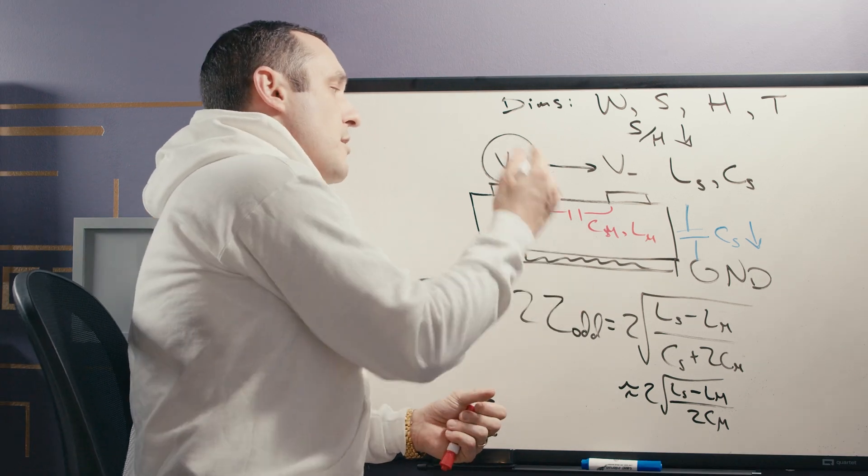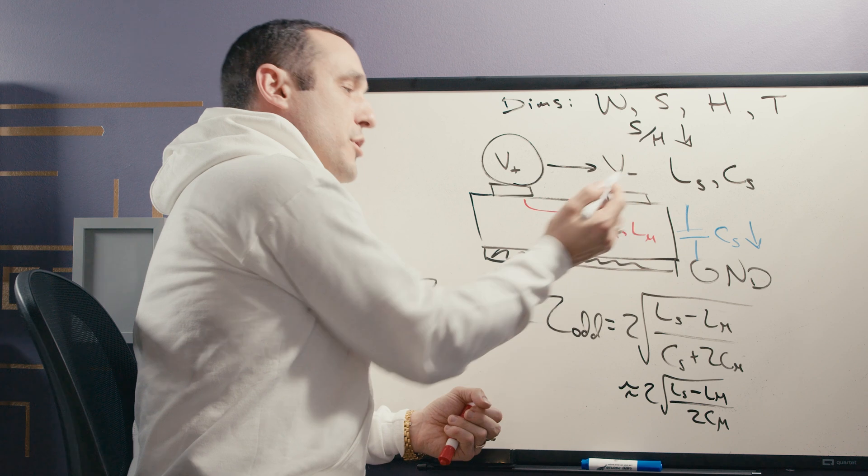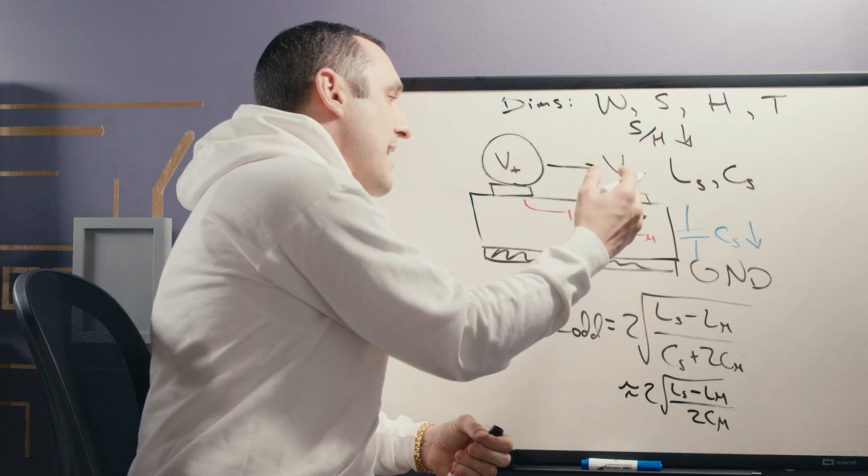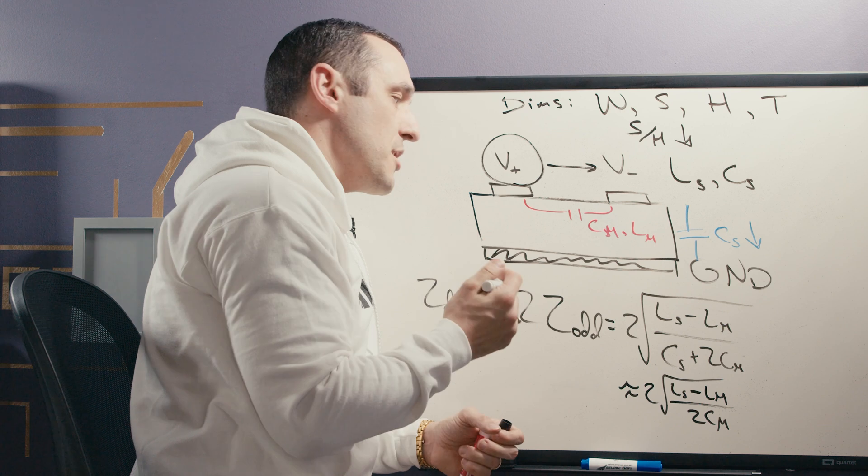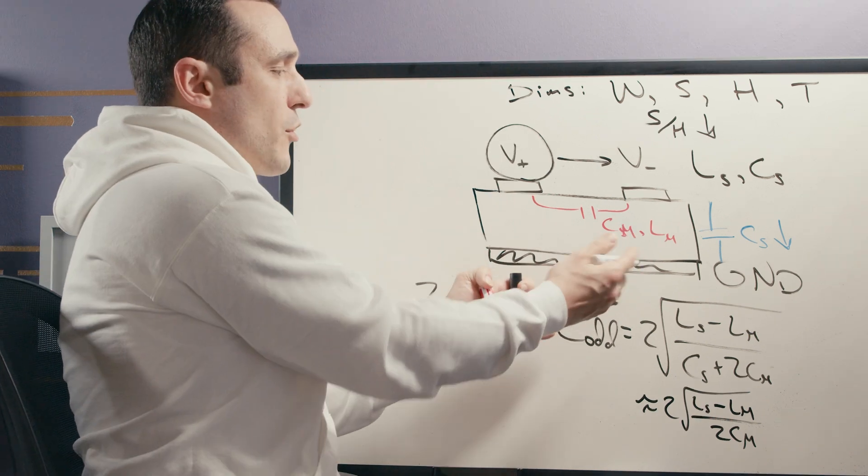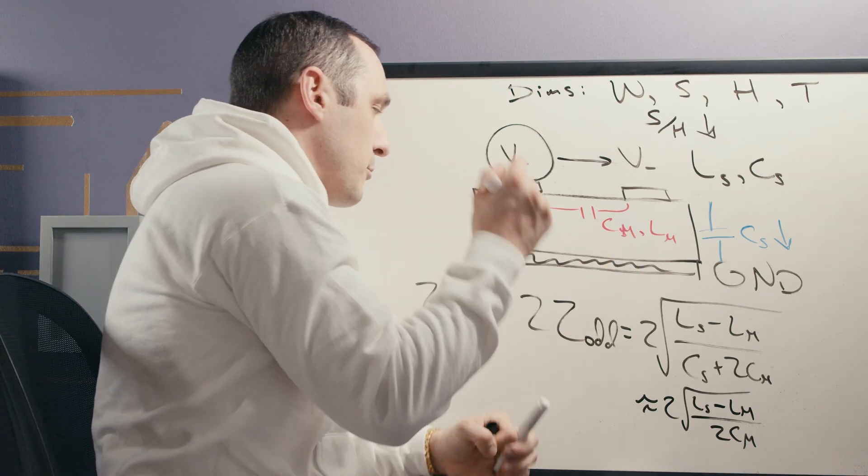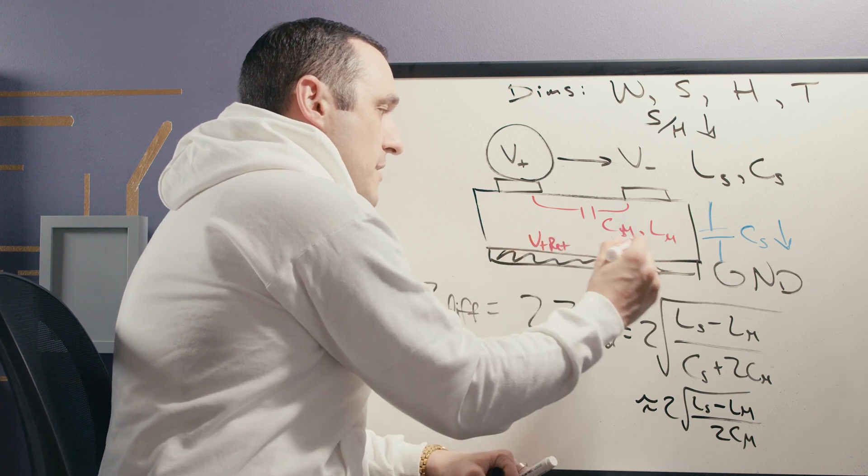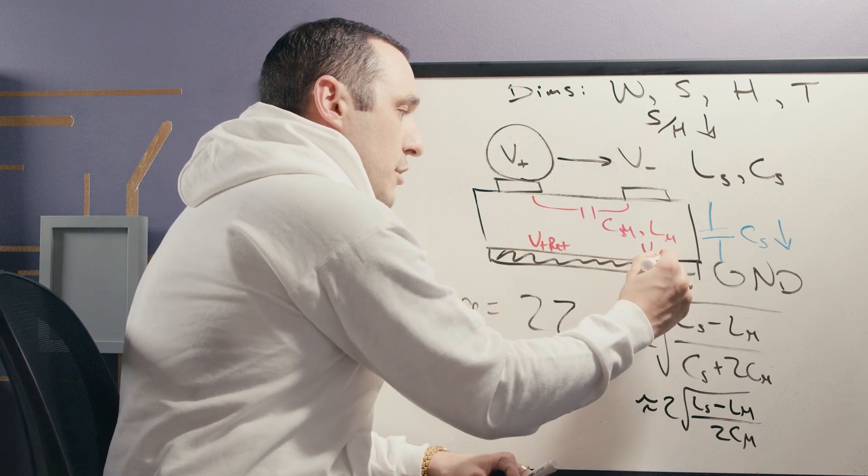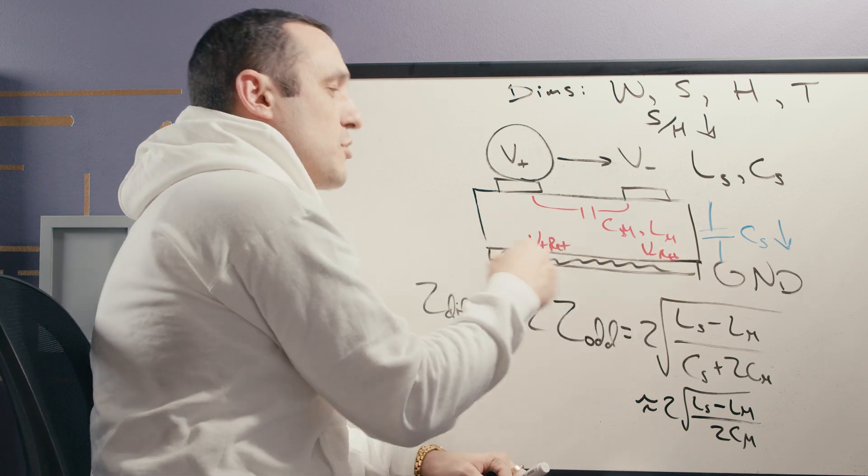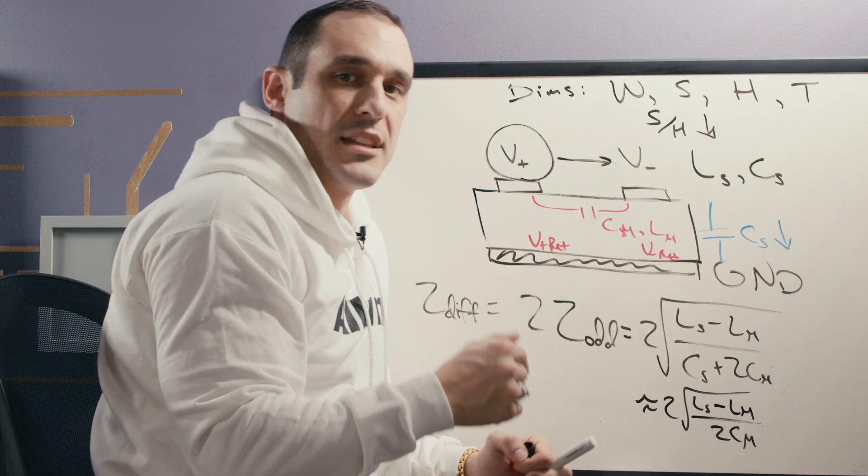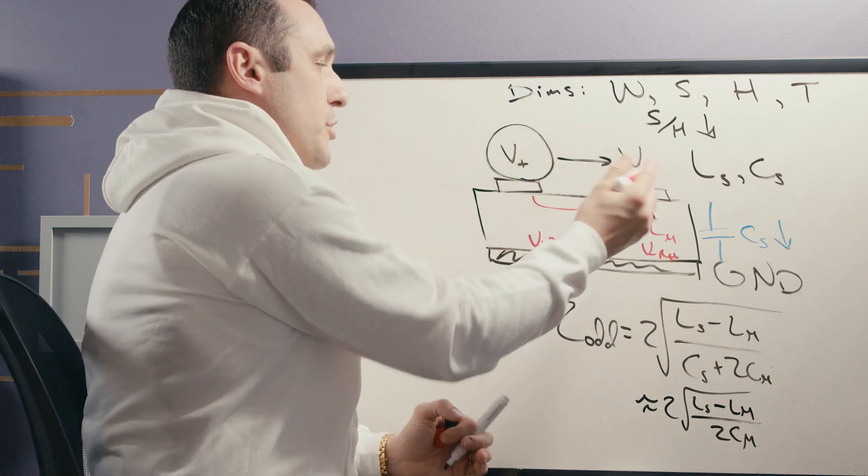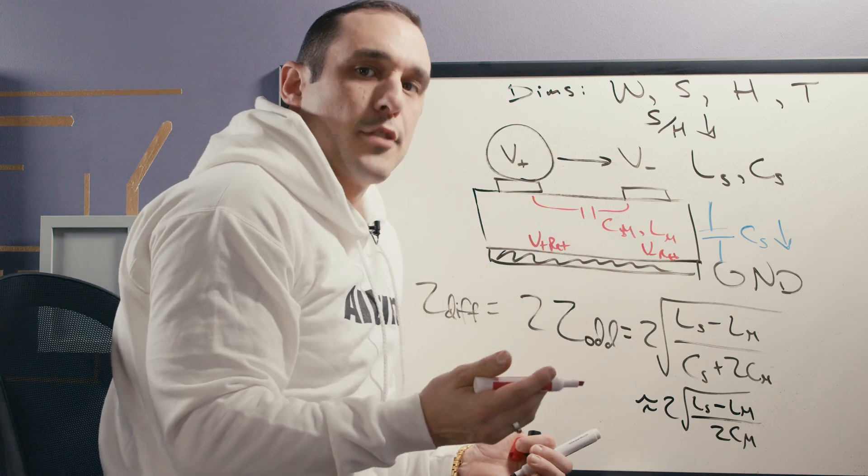This essentially means that the positive trace has its return current in the negative trace and vice versa. The negative trace has its return current mostly in the positive trace. Now there's always going to be a little bit of return current here in the ground plane. Here we would have the V positive return and then here we would have the V negative return. And they're going to have some sort of nearly or approximately Gaussian distribution beneath the traces. But mostly the return current is going to be isolated in the other trace.